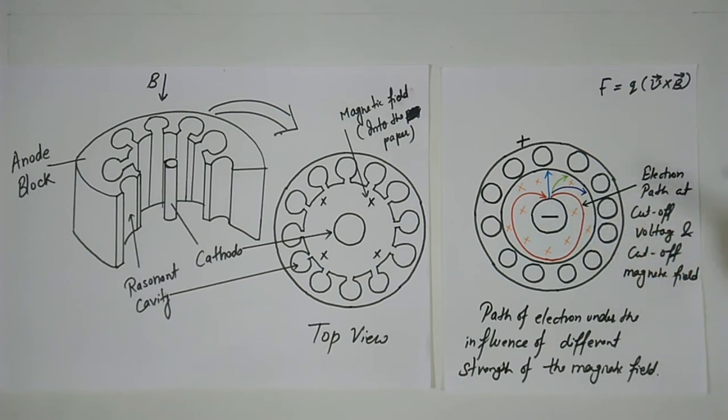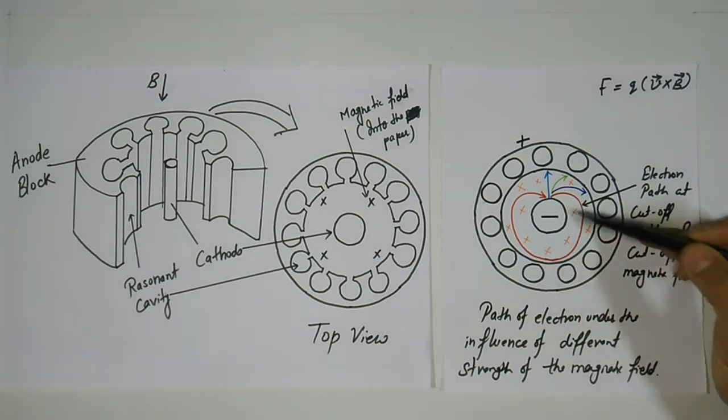The values of anode voltage and magnetic field strength are adjusted such that the electrons just fail to reach the anode in their circular path. At this stage these electrons produce oscillations at microwave frequencies. These values of anode voltage and magnetic field strength are called cut-off magnetic field and cut-off voltages.